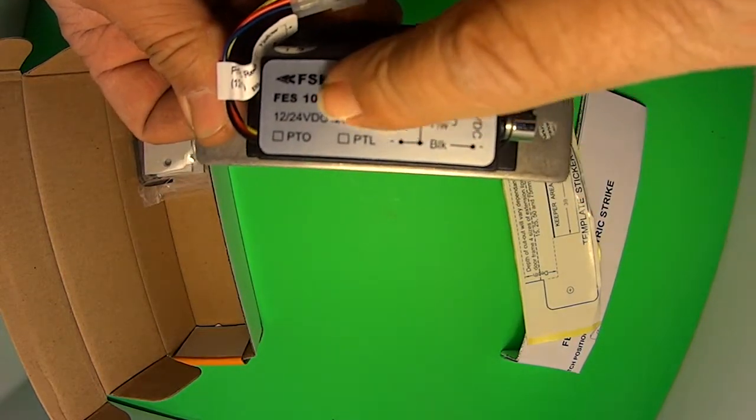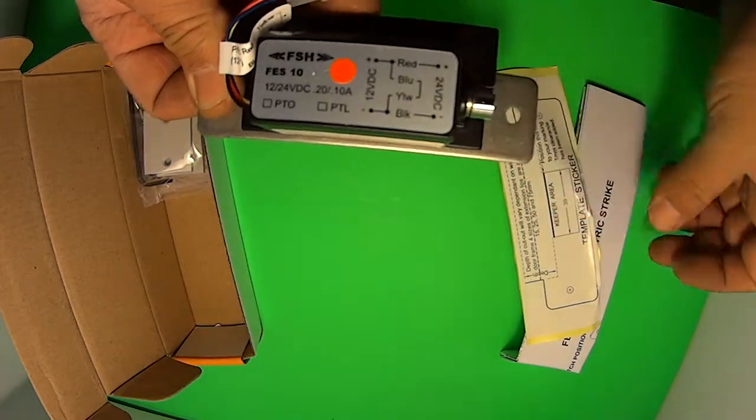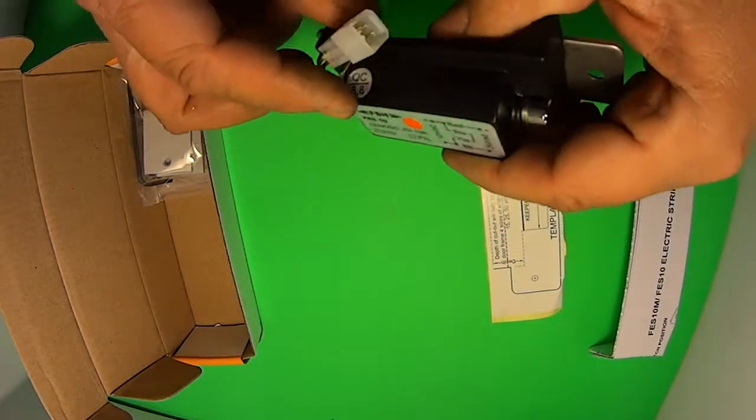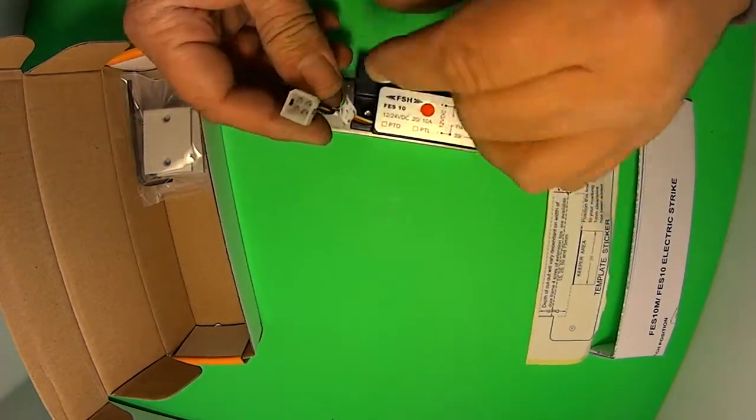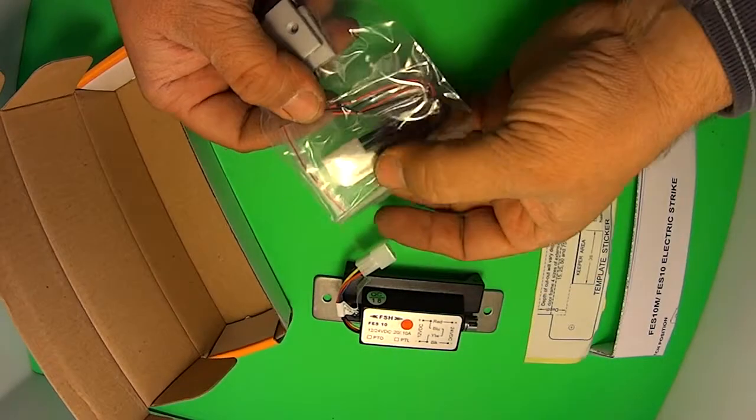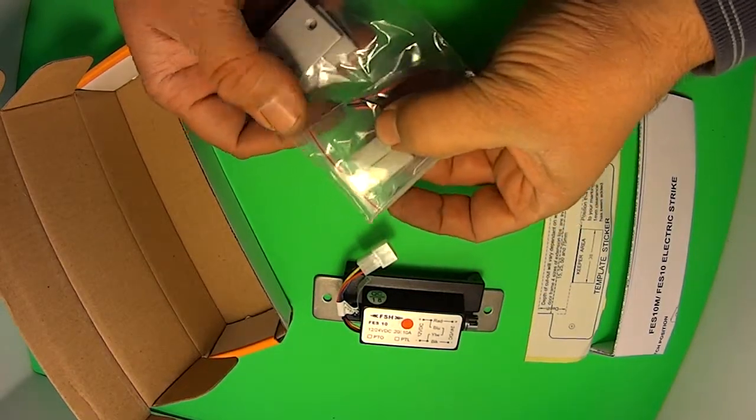It also can be changed from power to lock to power to open by removing this and following the instructions. If you have 12 volt you would hook up this particular part here. If you have 24 you would hook up this one here.